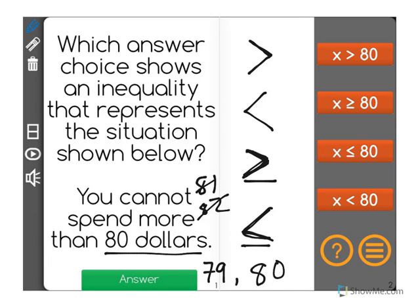And we actually can spend $80. So we can't spend $81 or $82. So we know that x is going to be less than $81. But what we also know is that we can spend $80.